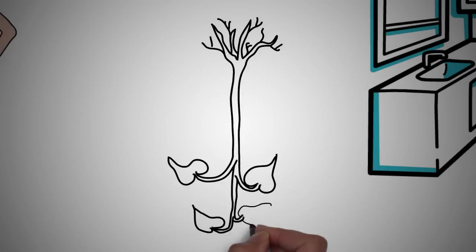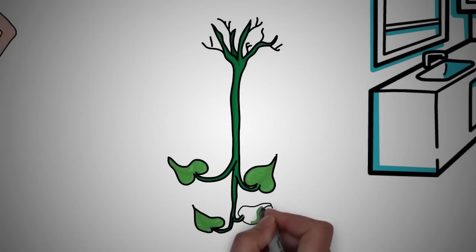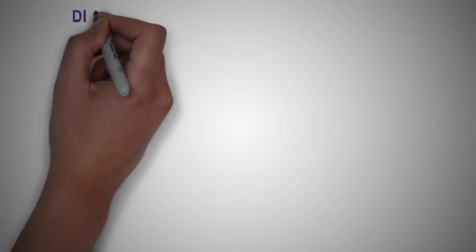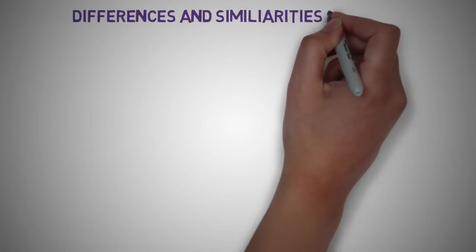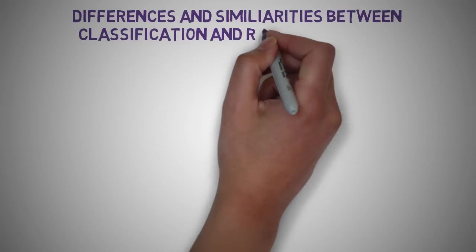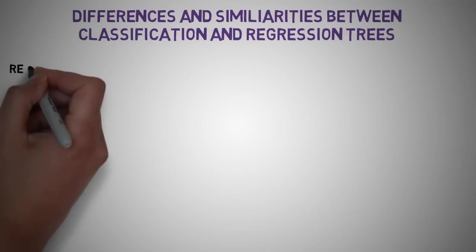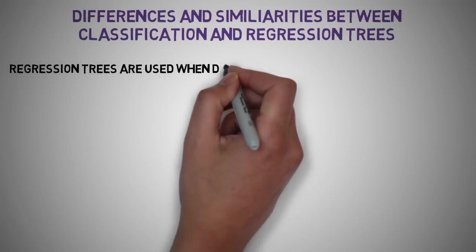A decision tree is drawn upside down with its root at the top. In the image, let's look at the primary differences and similarities between classification and regression trees.